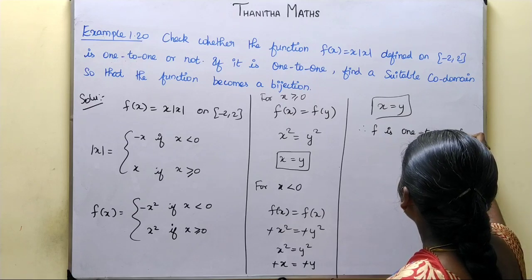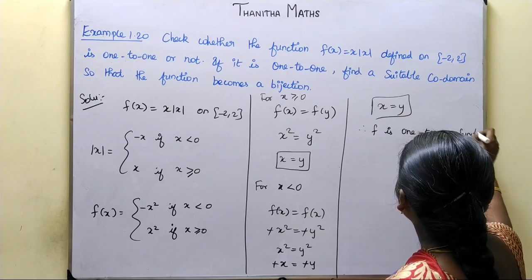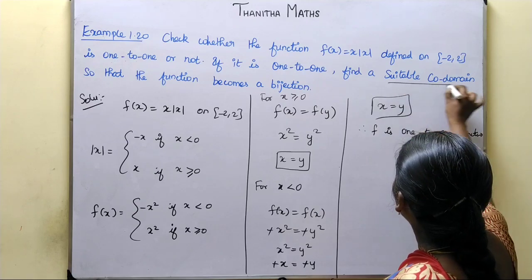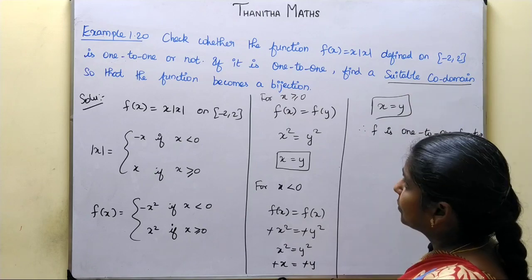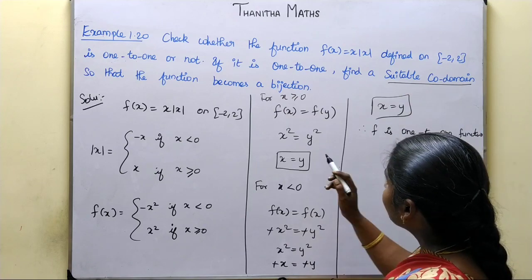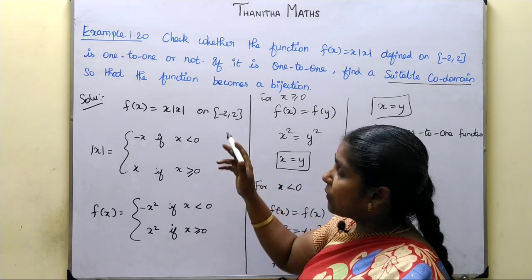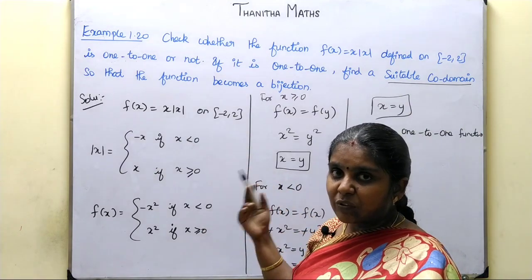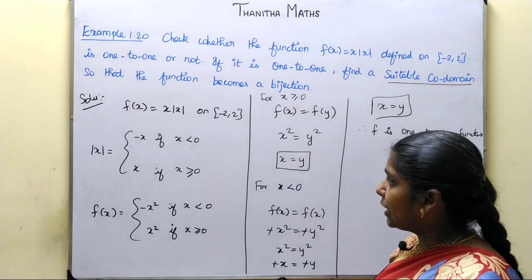Therefore, f is a one-to-one function. Now we find a suitable codomain. The codomain is determined by the minimum and maximum values of f of x.